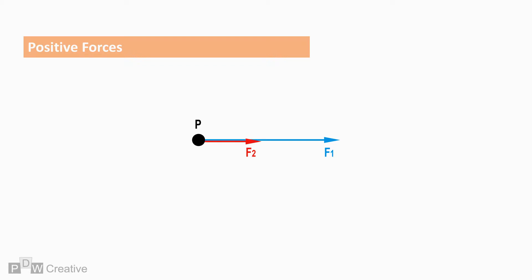A second force of half the magnitude acting in the same direction would be drawn at half the length. The total force could be calculated by combining the measurement of the two forces and drawing a new line, or by simply adding the two forces.